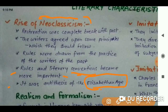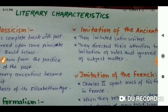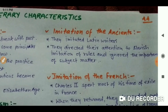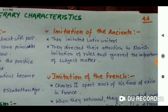The next characteristic is imitation of Ancients. Writers imitated mostly Latin writers and French works. They directed their attention to a slavish imitation of rules and ignored the importance of subject matter, which had been important in the Elizabethan Age.